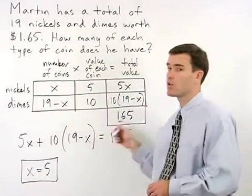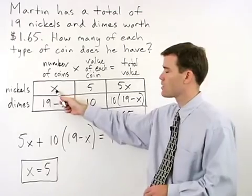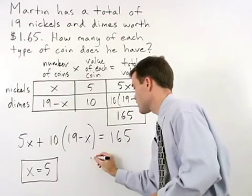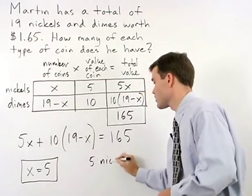Going back up into our chart, remember that x represents our number of nickels. So Martin has 5 nickels.